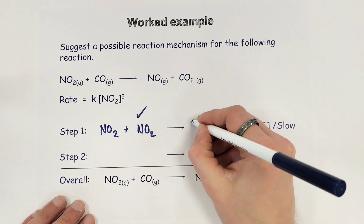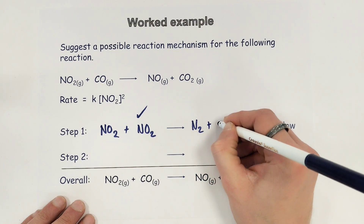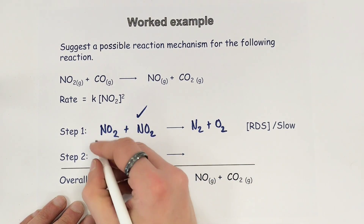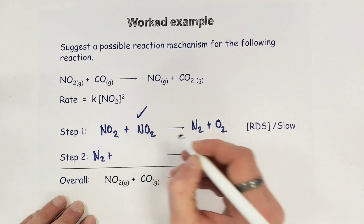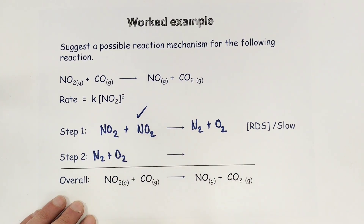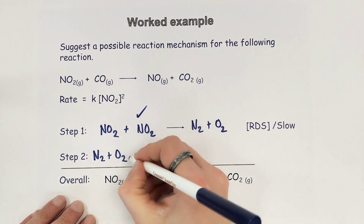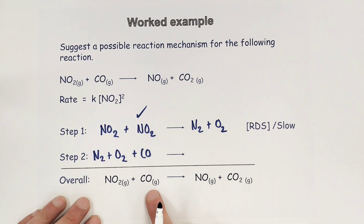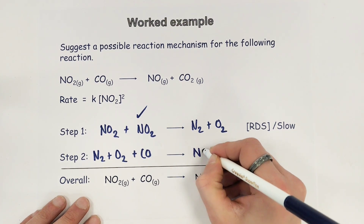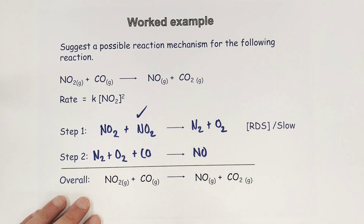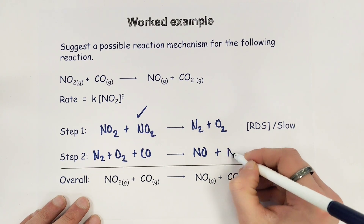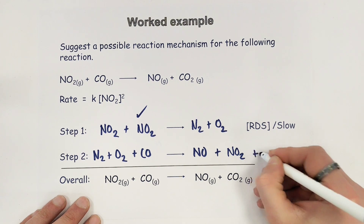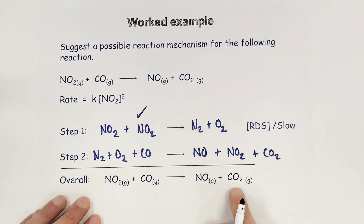This time I'm going to form some nitrogen and some oxygen. They don't appear in the overall equation, so I'm immediately going to start with those in step two to remove them, and react them with carbon monoxide because I need that as one of my reactants in the overall equation. On the right-hand side I'm going to form some nitrogen monoxide, some nitrogen dioxide (to cancel down to one mole in the overall equation), and finally my carbon dioxide.